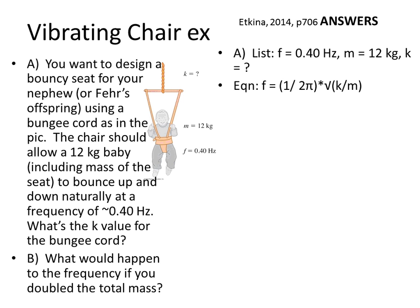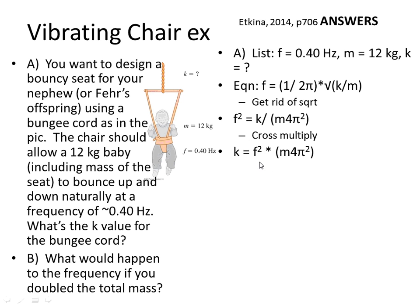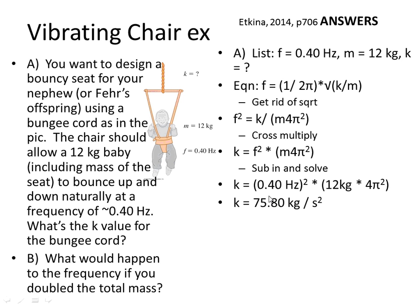Since k is inside a square root, we square both sides and rearrange. Plugging in frequency 0.4 squared and mass 12 before the pi squared, we get a k value of approximately 75.80 — or rounding to two sig figs, 76 — kilograms per second squared, also written as newtons per meter.